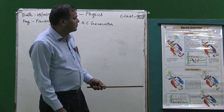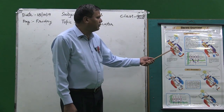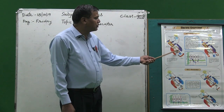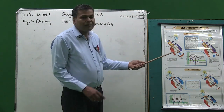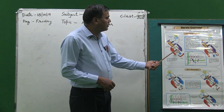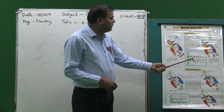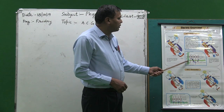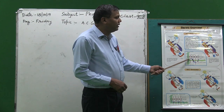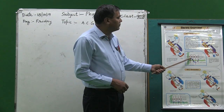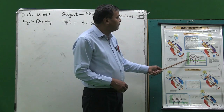In the working of the AC generator, whenever the rectangular coil having many number of turns rotates in a strong magnetic field, the magnetic flux linked with the coil changes. When the rectangular coil makes an angle of 0 to 90 degrees, as you can see in this graph, the magnetic flux linked with the coil becomes maximum. When magnetic flux is maximum, according to Faraday's law, the induced current produced in the coil also takes a maximum value.